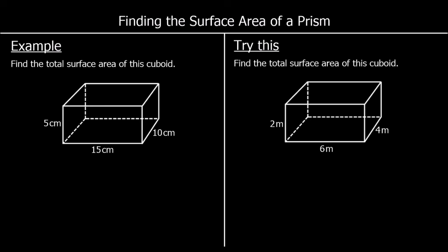To find the total surface area of a shape, we find the area of every surface and add them all together. In this first example, we've got a cuboid, and a cuboid is going to have six surfaces.